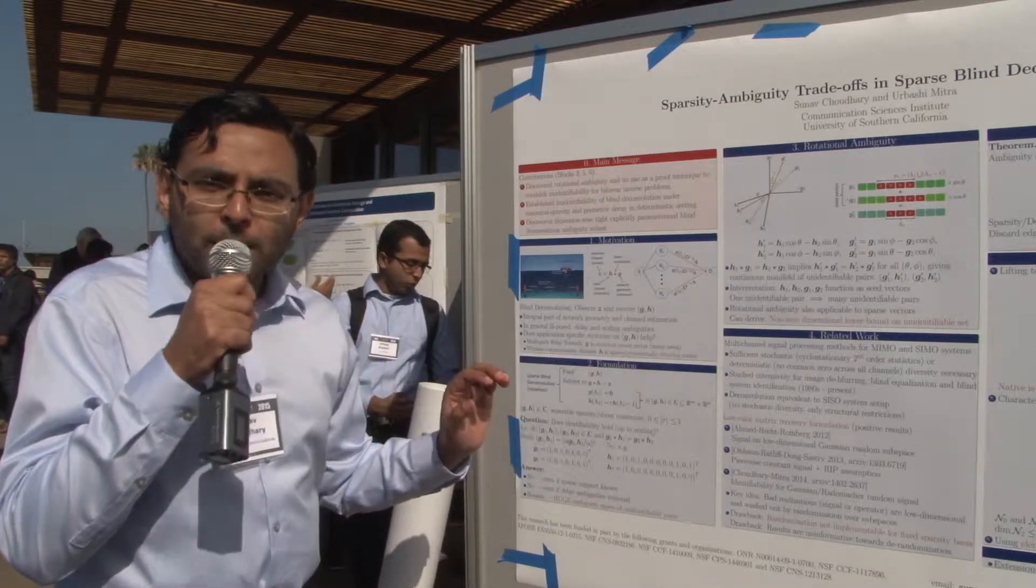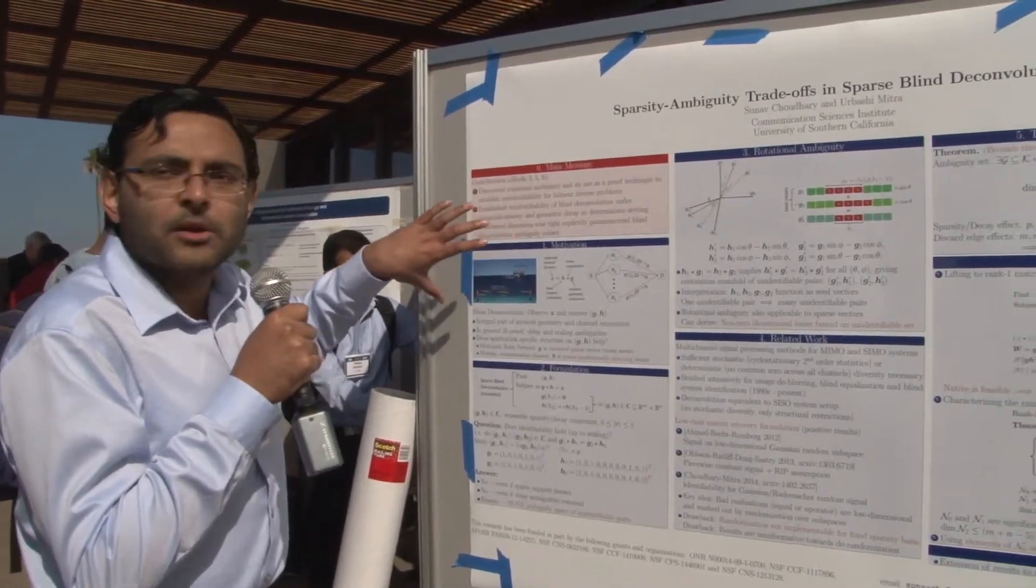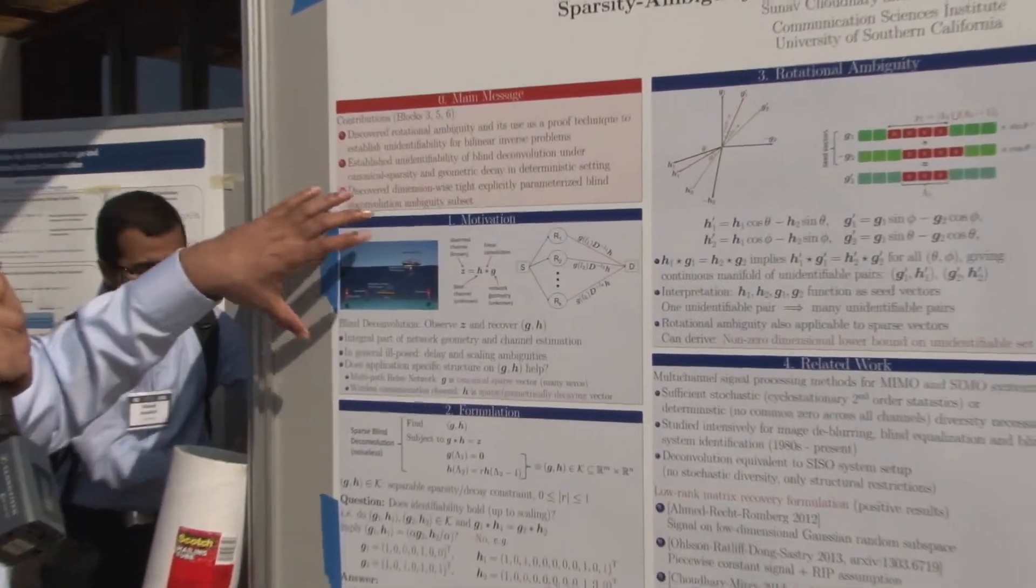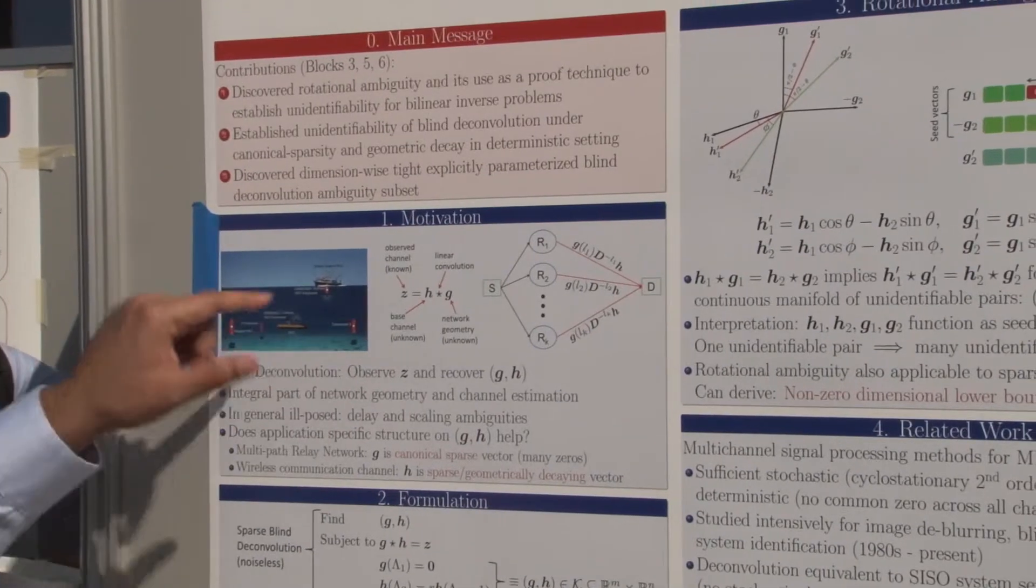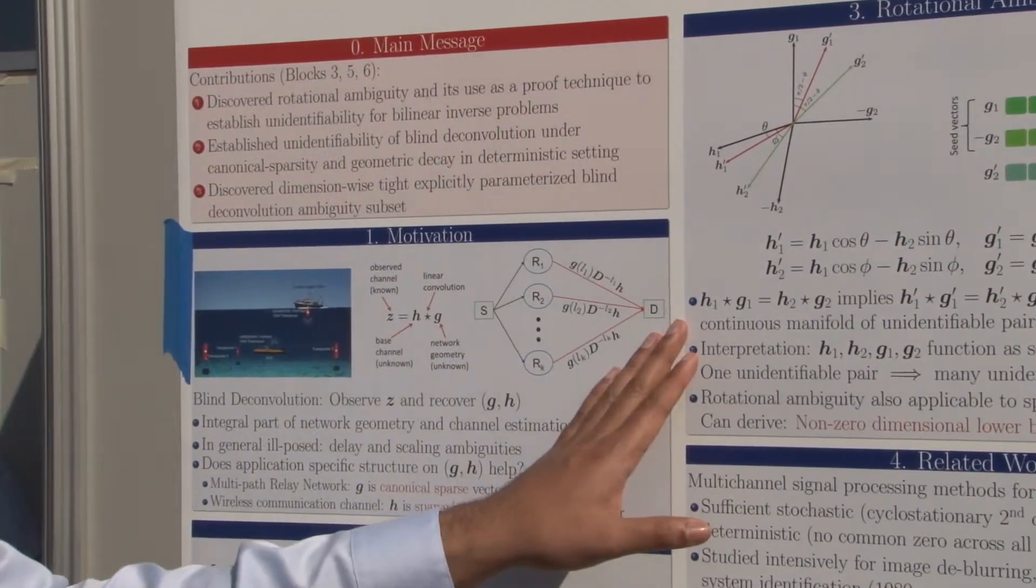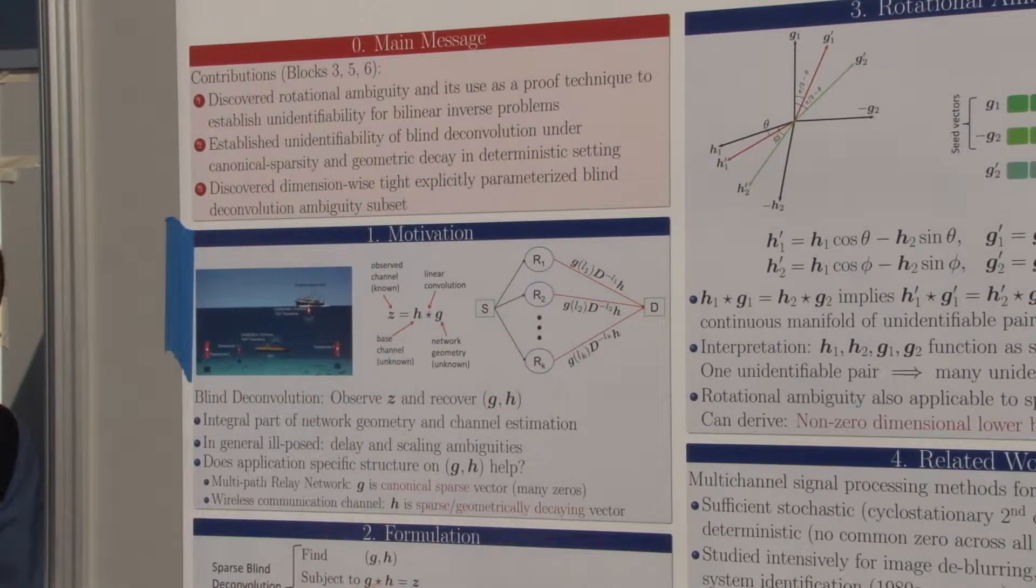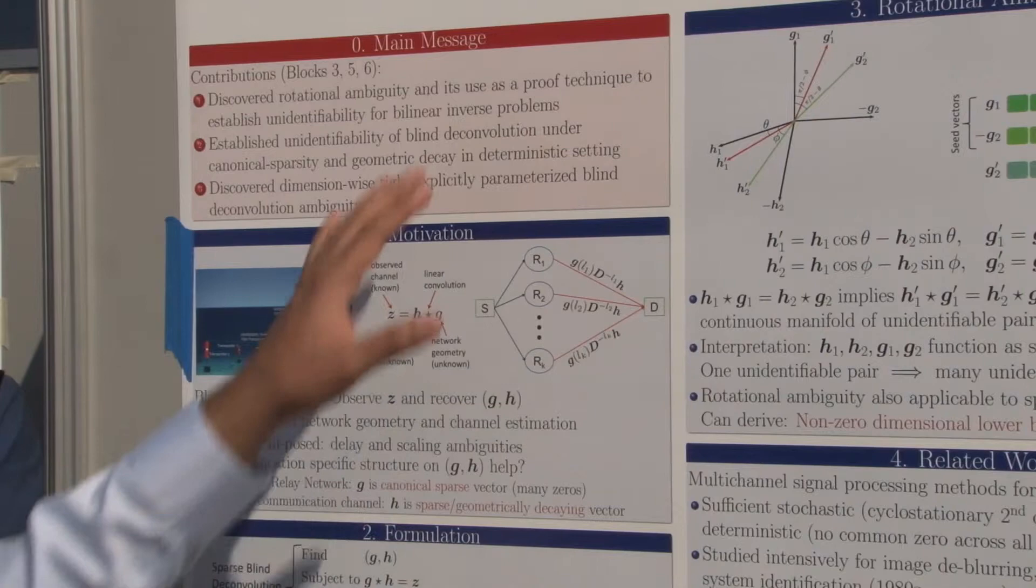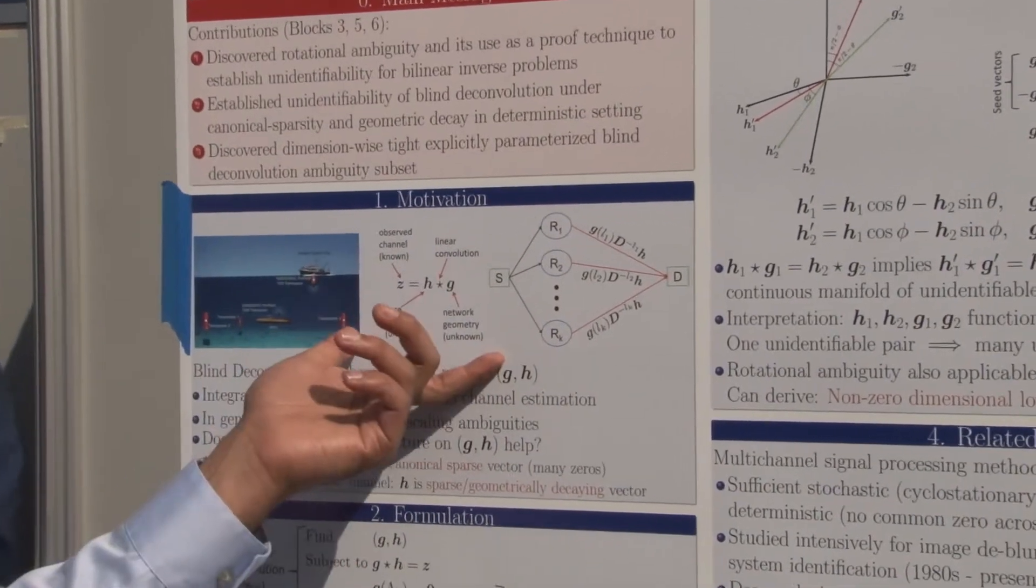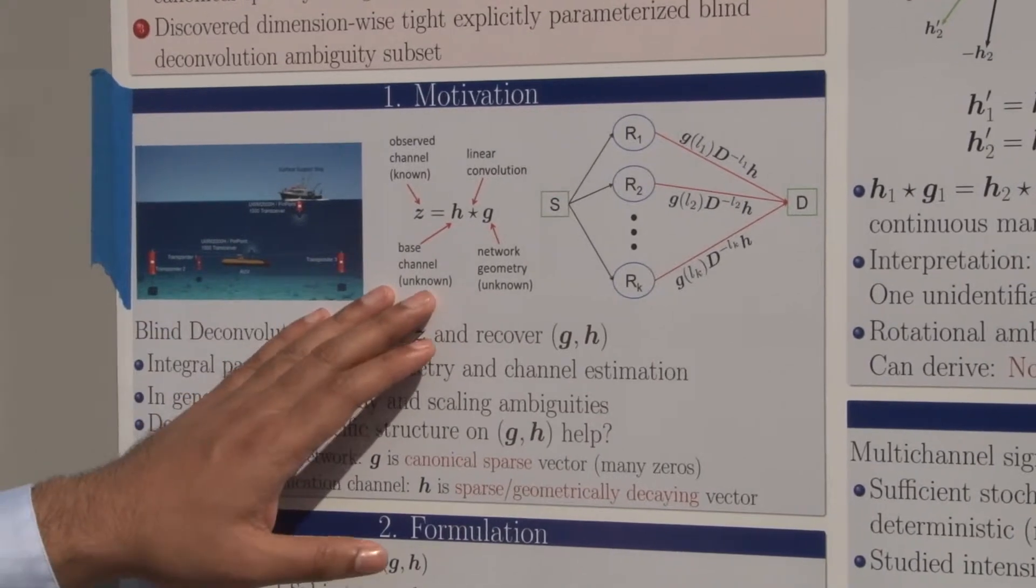This problem comes up in a wide variety of settings, but our motivation was from an underwater acoustic communication perspective, where you can have a lot of relay nodes coming into a single destination. Each link is a multipath channel which is scaled and delayed differently. In this setting, you can capture it as a deconvolution problem where the network geometries and base channels are both unknown.